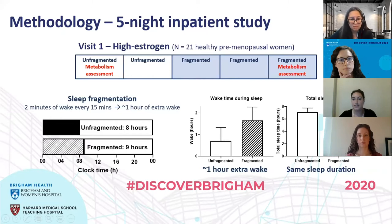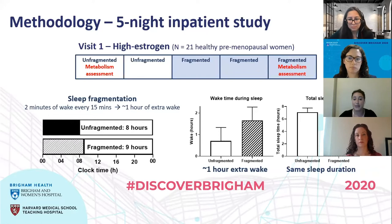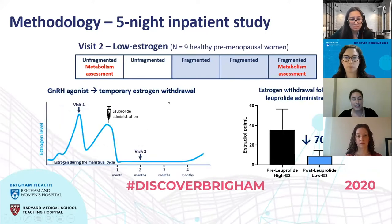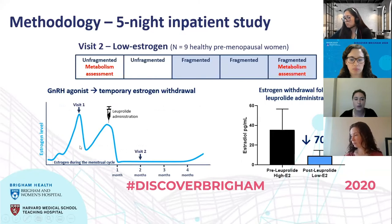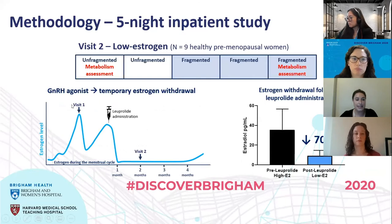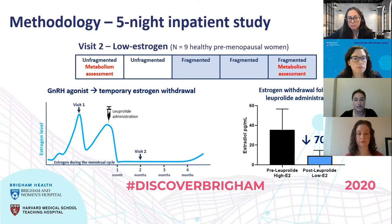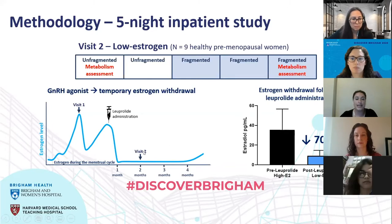What our study didn't change was total sleep time — sleep duration between the two conditions was identical. This was by design, because we are trying to mimic the type of sleep disruption most commonly seen in menopause. The difference between our two study visits had to do with estrogen levels. Visit one, which I just explained, was conducted in a high estrogen condition. This blue line roughly depicts estrogen over a typical monthly menstrual cycle, and we scheduled this first visit to occur when estrogen levels are naturally at their highest.